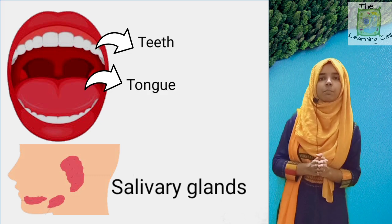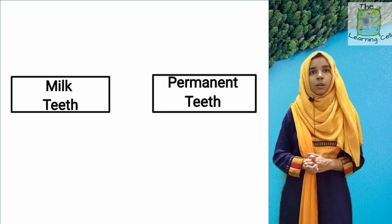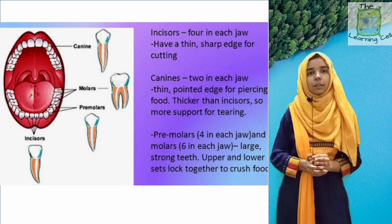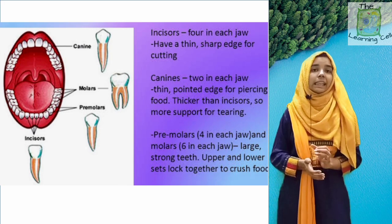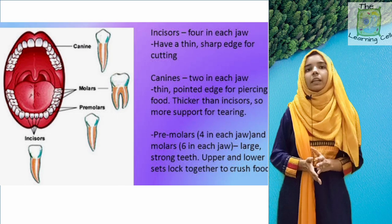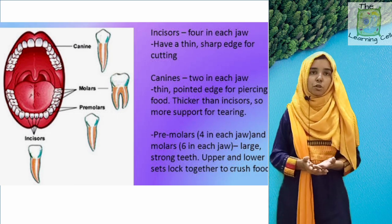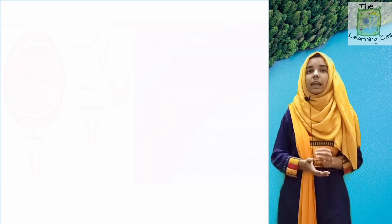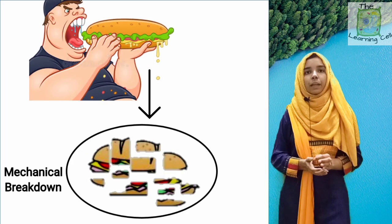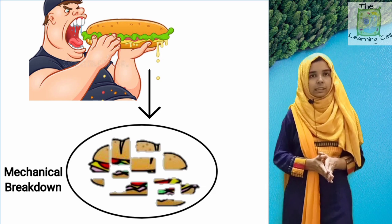Starting from the teeth, human beings have two sets of teeth: milk teeth and permanent teeth. Permanent teeth are of four types: incisors, canines, premolars, and molars. What we need to know is that teeth are responsible for the mechanical breakdown of food from larger particles into smaller particles.